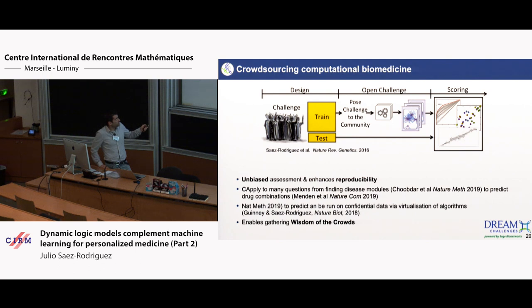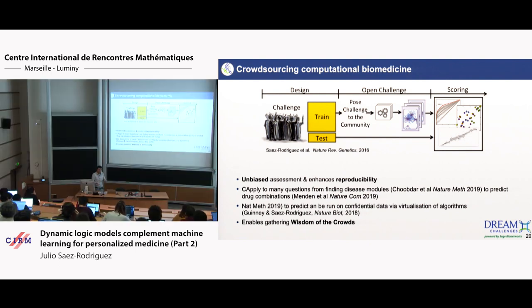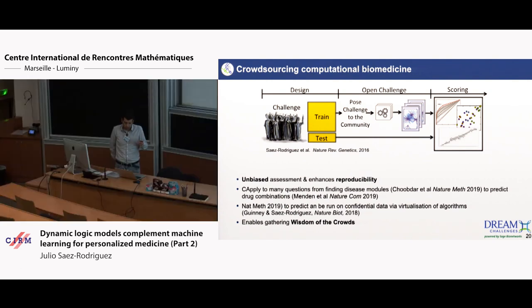Anyone takes the data, builds models, you ask them to predict the test data — classic machine learning context — and then you score that. The idea is that it's unbiased: because I score the method but don't build it, I'm not biased. You always ask for the code and explanation of the method, so you have reproducibility. It can be applied to many types of questions — drug response, disease modules, drug combinations. And you can also run it if you have data you cannot share from patients, using a virtualization environment where people submit algorithms in a container like Docker.